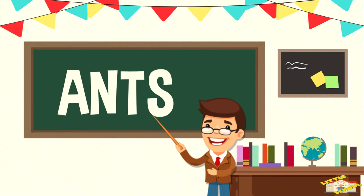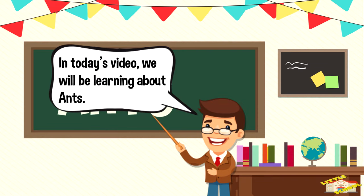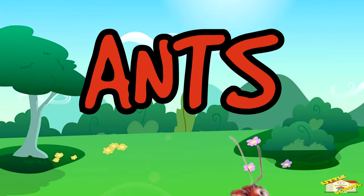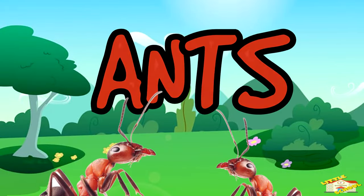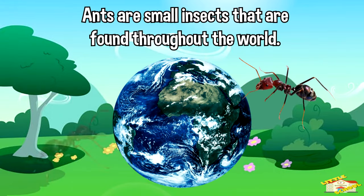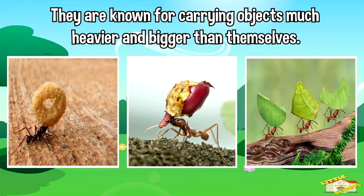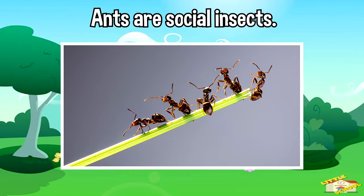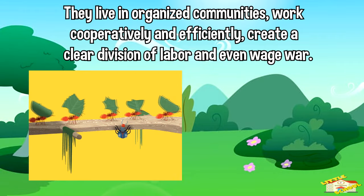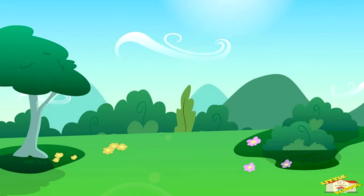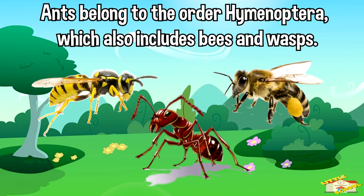Hey kids, in today's video we'll be learning about ants. Are you ready? Let's begin. Ants are small insects that are found throughout the world. They are known for carrying objects much heavier and bigger than themselves. Ants are social insects — they live in organized communities, work cooperatively and efficiently, creating a clear division of labor and even wage war.